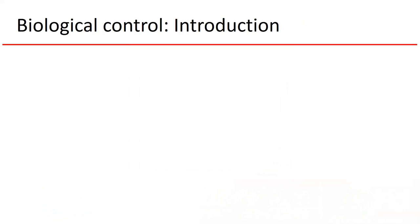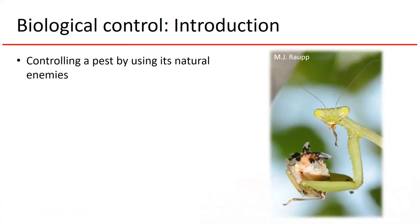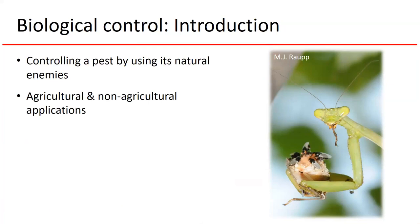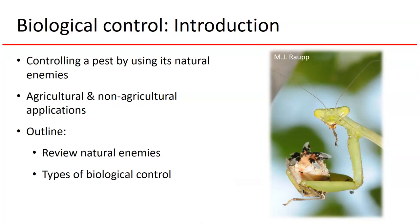As an introduction, a definition of what biological control is: it's essentially controlling any pest by using its natural enemies — other organisms that would naturally attack it in the environment — as opposed to using synthetic chemical pesticides. There are agricultural and non-agricultural applications for biological control, but we're going to focus on the agricultural applications. Today we'll review what natural enemies are, talk about the different players in biological control, go over different types of biological control applications, and discuss specific examples of each.